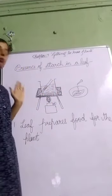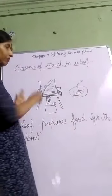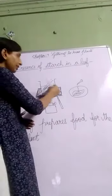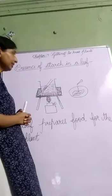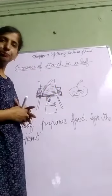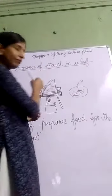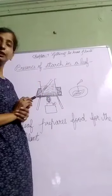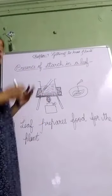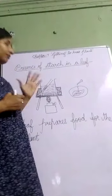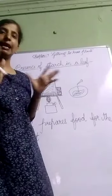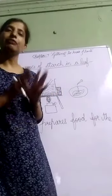Now, what we have to do? We take a tripod stand, keep a wire gauze on it, and place a beaker on it. Fill this beaker three-fourths with water and light the spirit lamp. We keep the test tube containing spirit with a leaf — place the leaf in the test tube and dip it in the spirit. When the water starts boiling in the beaker, you will observe that green color is coming out of the leaf.